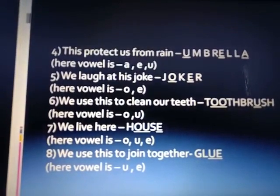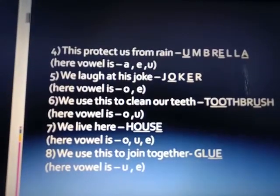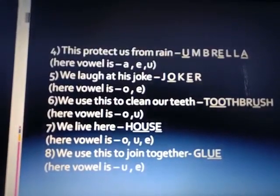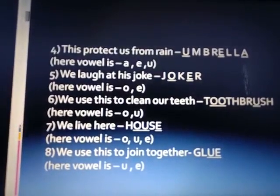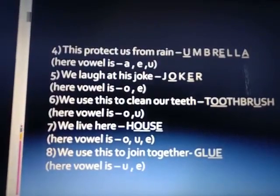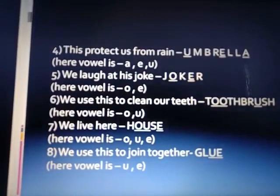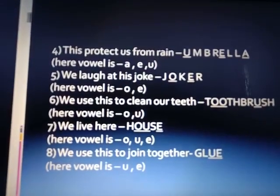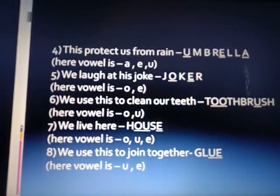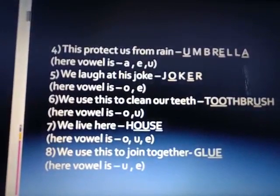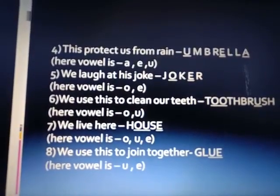We use this to clean our teeth — toothbrush, T-O-O-T-H-B-R-U-S-H. The vowels are O and U. We live here — house, H-O-U-S-E. The vowels are O, U, and E. We use this to join together — glue, G-L-U-E. The vowels are U and E.